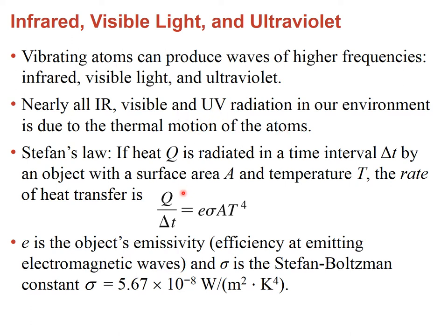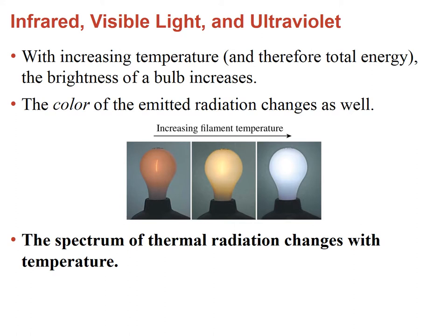There is a relationship between the heat radiated per unit time and the temperature of the object: it goes like temperature to the fourth power. The constant of proportionality involves the emissivity ε of the object and the Stefan-Boltzmann constant σ. As temperature increases, the energy and brightness of a light bulb increase; as the filament warms up, it changes color, demonstrating that the spectrum of thermal radiation changes with temperature.